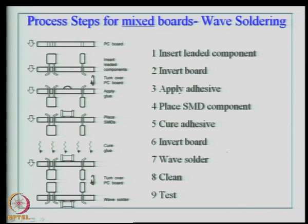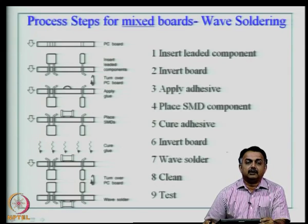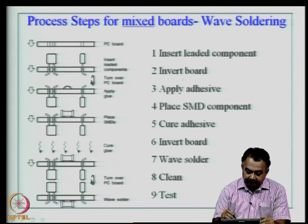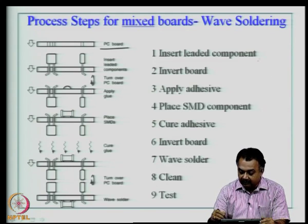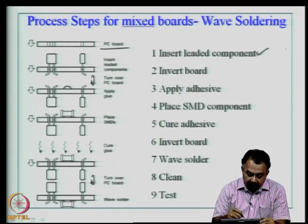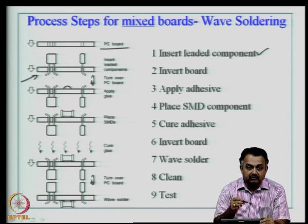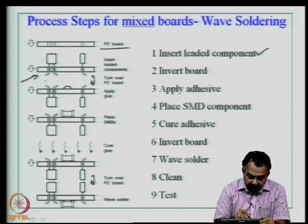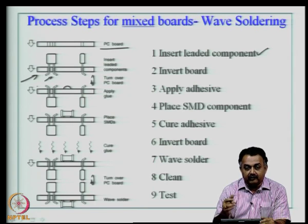What are the process steps for mixed boards — boards with both plated through-hole components and surface mount devices using wave soldering? First, your printed circuit board is ready. You insert the leaded component into the through holes. The through hole is plated with copper and the lead is bent so it does not move during wave soldering. Then you apply adhesive if you want to mount a surface mount device on the other side of the board.